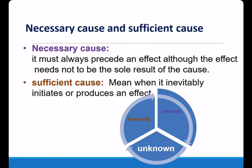The constellation of causes required for a patient to develop clinical tuberculosis can be depicted as a sufficient cause. The sufficient cause refers to a complete causal mechanism — a minimal set of conditions or events sufficient for the outcome to occur. Minimum here implies that all the conditions or events are necessary. In the pie model, each circle represents a sufficient cause containing component causes such as infection, immunity status, and several other unknown causes. By combining all these components, the full sufficient cause is formed.